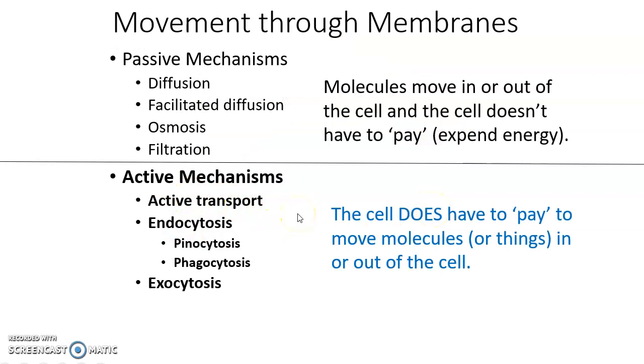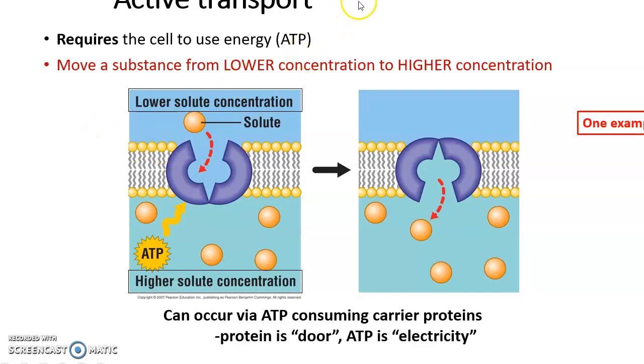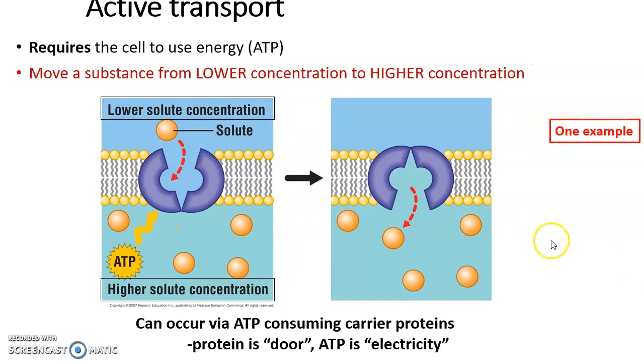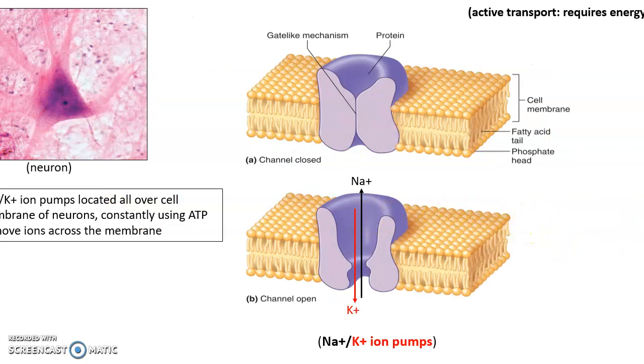Active transport. The cell does have to pay to cause the molecules to move, so energy is expended, and we're taking things from a low area and moving them to a high concentration area. Active transport and also the use of vesicles, endocytosis and exocytosis. So active transport is kind of like facilitated diffusion, except now we're using energy to move something from low concentration to high concentration. We have a carrier protein that is acting as a door. ATP is the energy needed to open the door to allow the solute to enter against its concentration gradient.